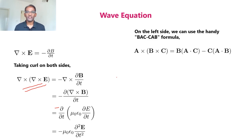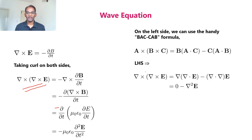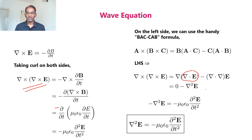For the left hand side, there is a rule in vector analysis known as the BAC-CAB rule, according to which A cross (B cross C) equals B(A dot C) minus C(A dot B). Expanding the left hand side: del cross del cross E equals del(del dot E) minus del² E. Since del dot E equals zero from Gauss's law, this becomes minus del² E. Therefore, del² E equals mu zero epsilon zero ∂²E/∂t², which is the wave equation written in terms of the electric field.